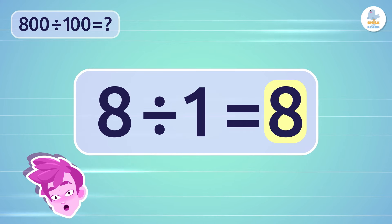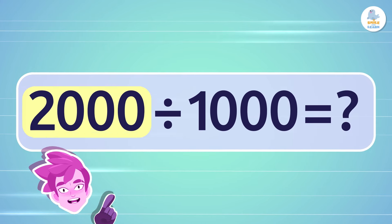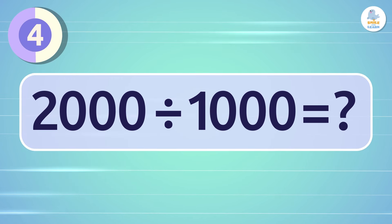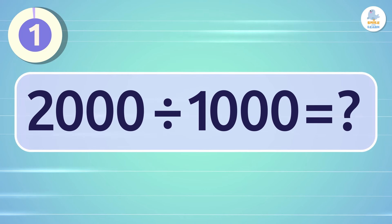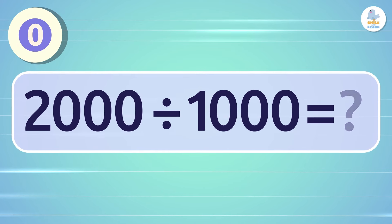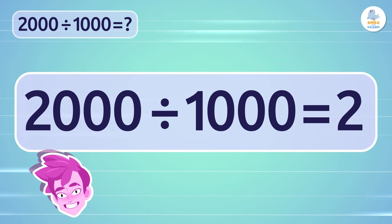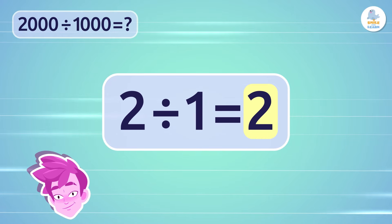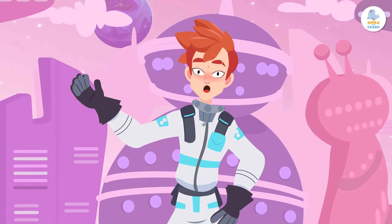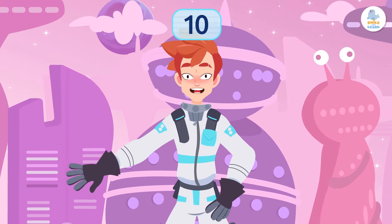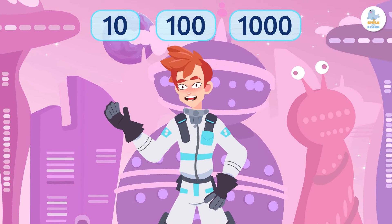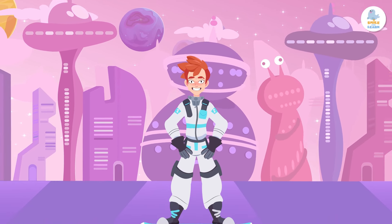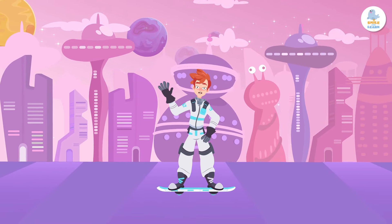What is 2,000 divided by 1,000? Great — it's 2! We start by removing the three zeros from each number and divide 2 by 1, which gives us 2. Now you know how to divide by 10, 100, and 1,000 quickly and effortlessly. Use these tricks whenever you need to calculate something fast. See you next time, little math stars!